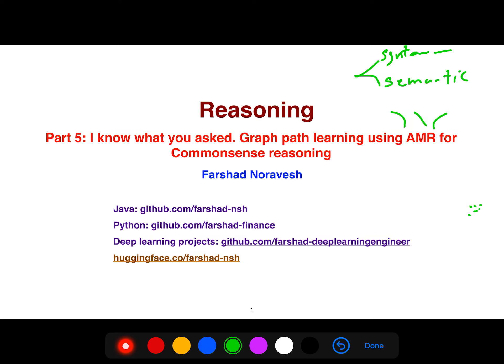Although people say that it is just good for English, I think it is also good for Persian language because Persian language is very similar to English. But we want to take advantage of graph path learning using AMR for something more important which is commonsense reasoning. And you can also use commonsense reasoning for something more important such as argument mining.